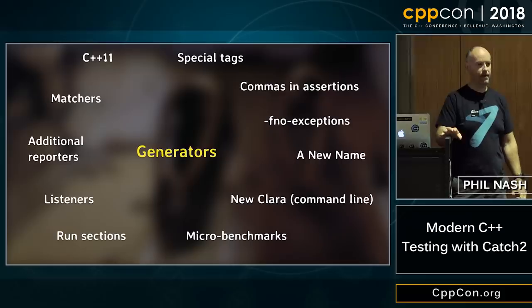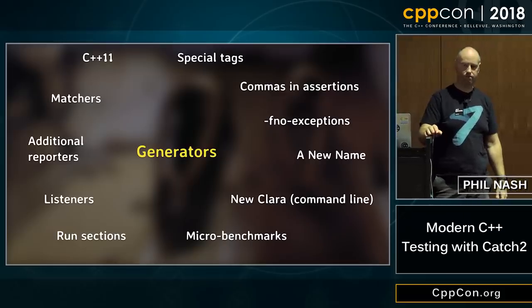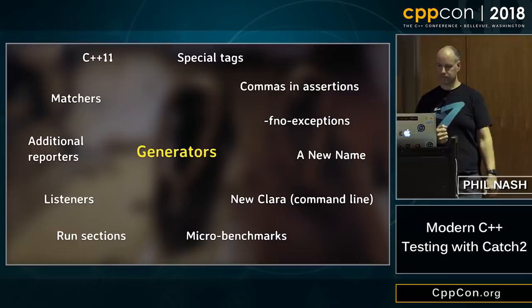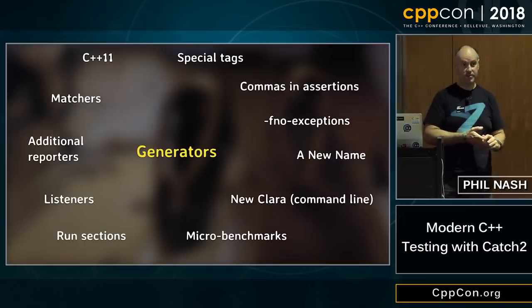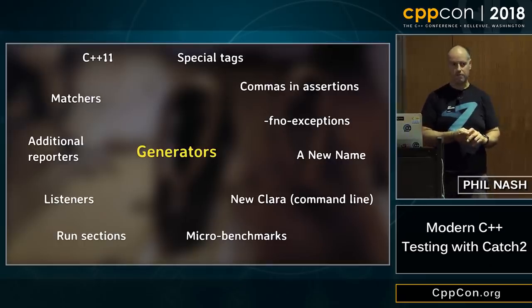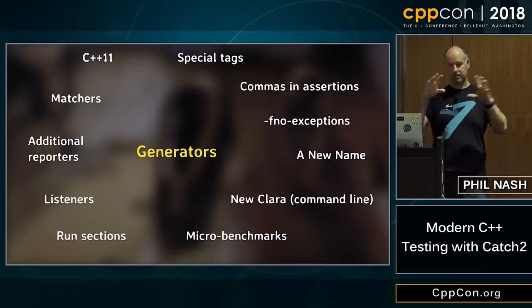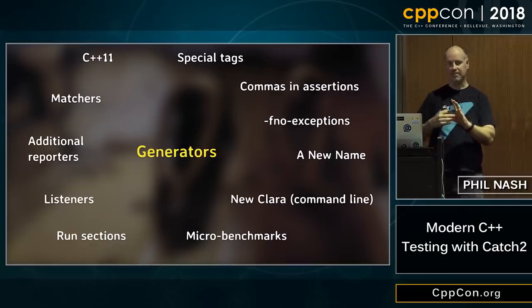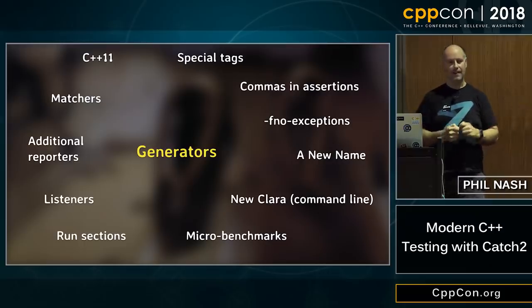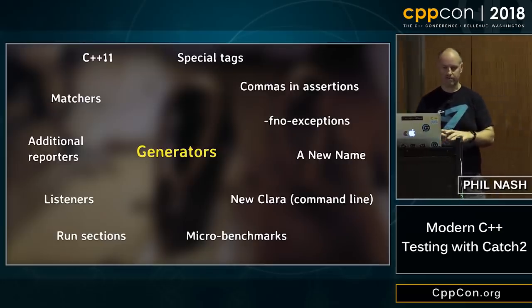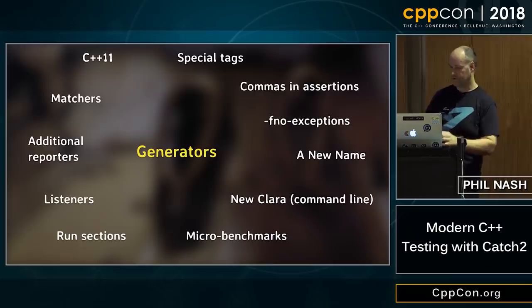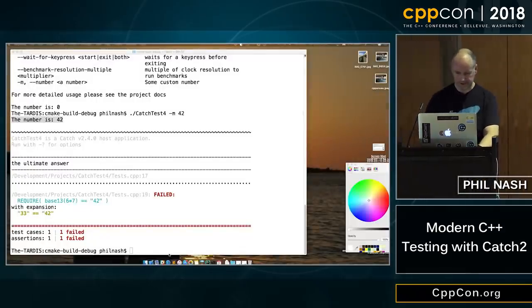We originally had an initial form of generators in one of the very early versions of Catch. But it had a problem: one of the powerful features of Catch is the ability to break a test up into multiple nested sections, and for each section it runs through the whole test case multiple times. That wasn't interacting well with generators — they needed to do the same kind of bookkeeping. So I had to rewrite all of that from scratch to support generators properly, and they are now in.